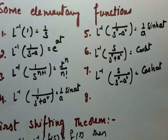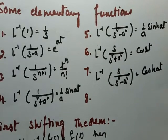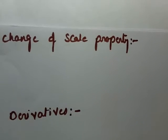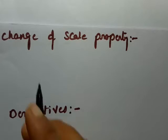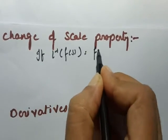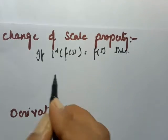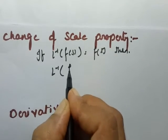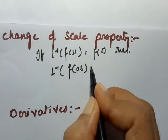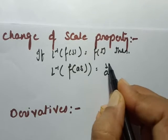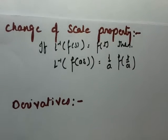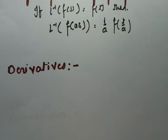The next one is the change of scale property for inverse Laplace transform. The change of scale property states: if inverse Laplace transform of F(s) is equal to f(t), then inverse Laplace transform of F(as) — when the question is asked in the form of 2s, 3s, 4s — the formula used is 1/a times f(t/a).